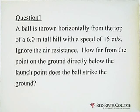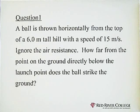A ball is thrown horizontally from the top of a 6 meter tall hill with a speed of 15 meters per second. Ignore the air resistance, how far from the point on the ground directly below the launch point does the ball strike the ground?